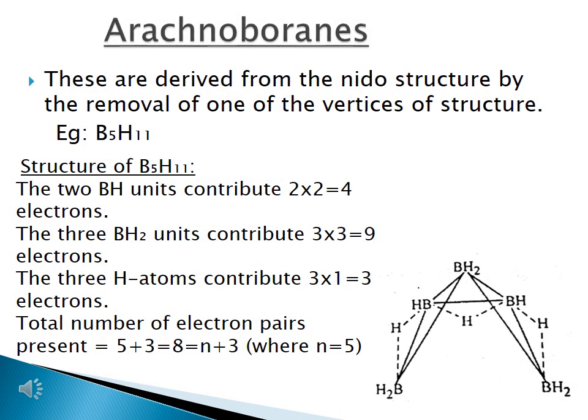The structure of arachno boranes. These are derived from the nido structure by the removal of one of the vertices. Example: B5H11. In this structure, 2 BH units contribute 2 × 2 = 4 electrons, the 3 BH2 units contribute 3 × 3 = 9 electrons, and the 3 additional hydrogen atoms contribute 3 × 1 = 3 electrons, giving a total of 16 electrons. Therefore, electron pairs = 5 + 3 = 8 = N + 3 where N = 5.